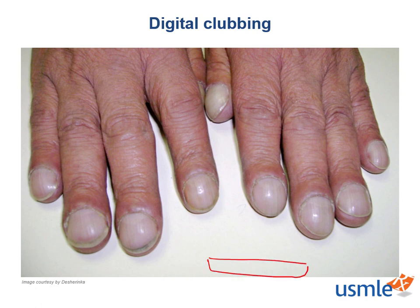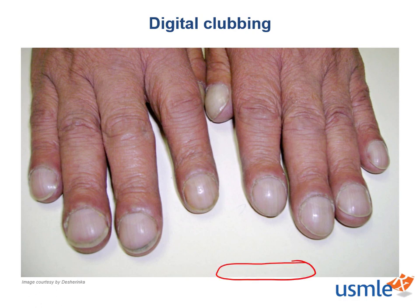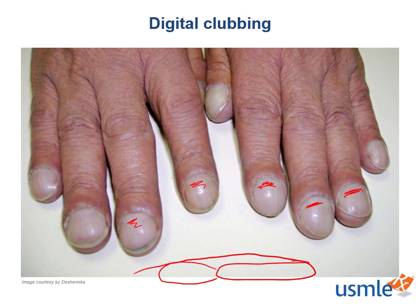This is your finger, and this is where your nail starts — just like a normal nail. This is the angle they're looking for. If you draw an angle here, that angle is less than 180 degrees in a normal finger. In digital clubbing, the nail bed and nail plate start getting larger, so the angle becomes greater than 180 degrees. As your nail grows, this angle gets bigger — that's what they're looking for.